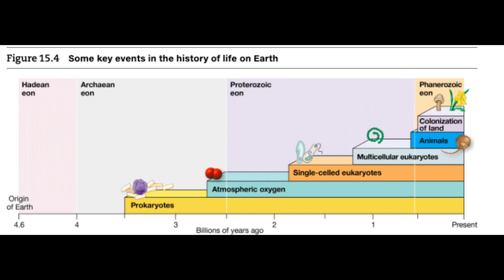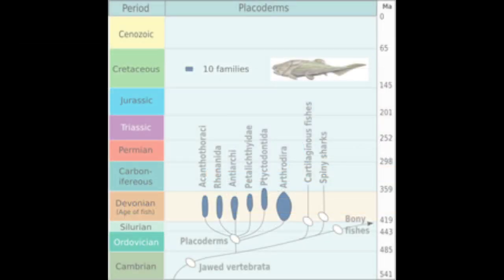The Cambrian basically picks up on the timescale at 540 million years ago. Then it's followed by the Ordovician, the Silurian, the Devonian, the Carboniferous, and we'll say something about each of these. The Permian is next, and then there's the Permo-Triassic disaster that wiped out 99.9% of all living things. That cleared the stage for the dinosaurs — Triassic, Jurassic, Cretaceous — which are then wiped out by an asteroid, clearing the stage for the Cenozoic rise of mammals.